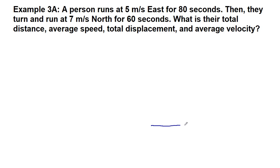We have a person who runs to the east at a speed of 5 meters per second, with the idea of a direction of east that is their velocity, and they are running at that velocity for 80 seconds. Then they turn and run 7 meters per second north for 60 seconds.